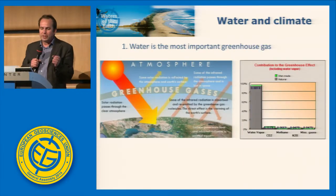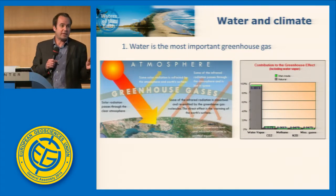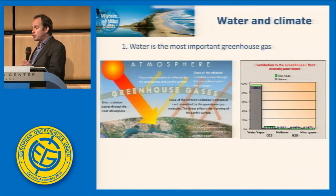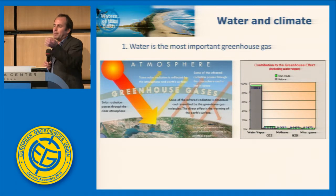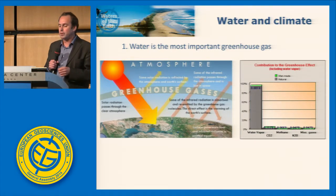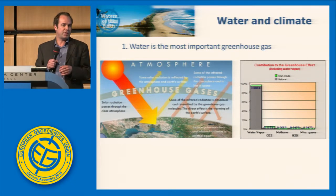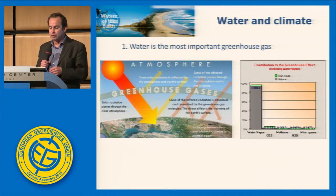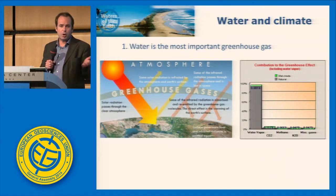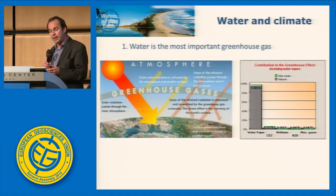Water is obviously very important for modulating climate. It is the strongest greenhouse gas we have. By molecule, it is not as strong as CO2 or methane, but we have much more water in the atmosphere than CO2 and methane, making it the most important greenhouse gas. Without it, we would have much larger differences between summer and winter, and night and day — water makes for a mild climate in many parts of the world.